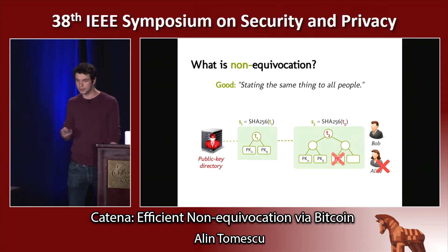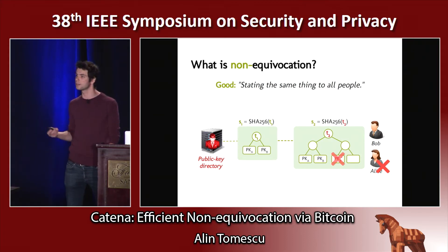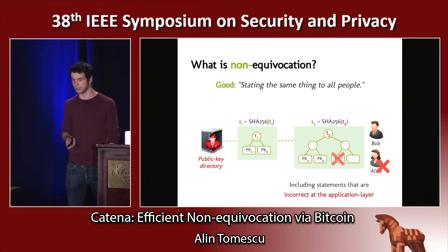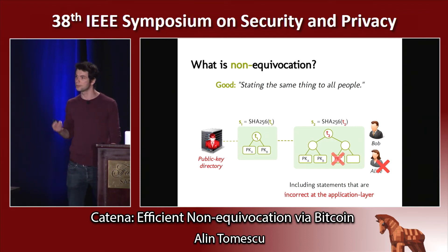This is to say that such attacks don't go undetected, which is a step forward. To summarize, non-equivocation simply means saying the same thing to all people. Even if the thing you're saying is incorrect at the application layer — like this statement where Alice was impersonated — at least we can detect such incorrect statements.